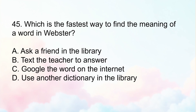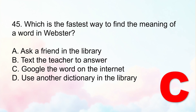Number 45: Which is the fastest way to find the meaning of a word in Webster? Letter A, ask a friend in the library. Letter B, text the teacher to answer. Letter C, Google the word on the internet. Or Letter D, use another dictionary in the library. The correct answer is Letter C, Google the word on the internet. Using search engines like Google gives instant access to digital dictionaries with definitions, pronunciation, and examples — making it the fastest and most efficient way.